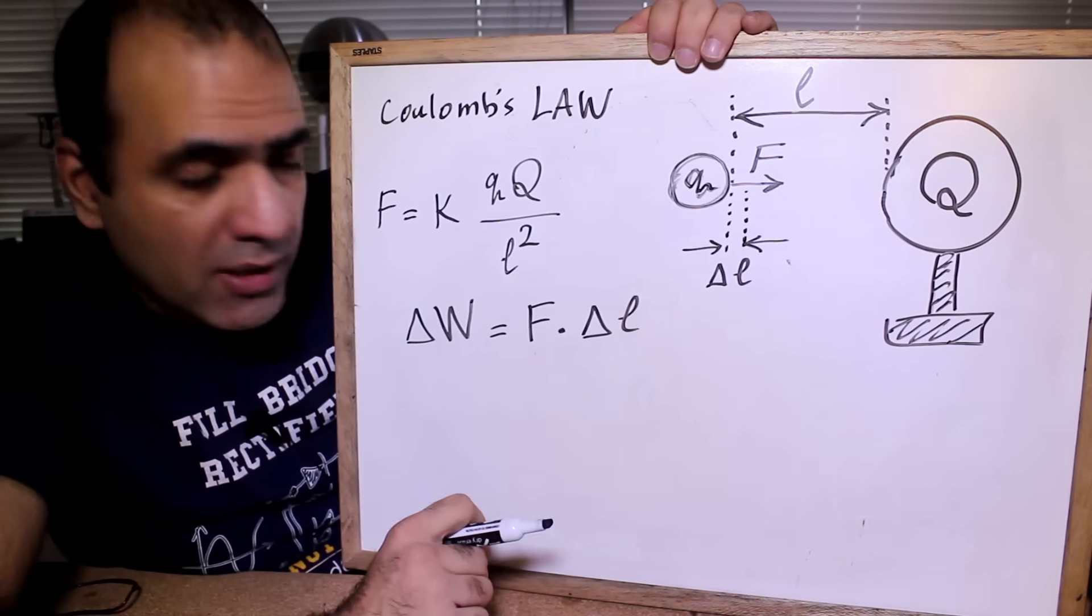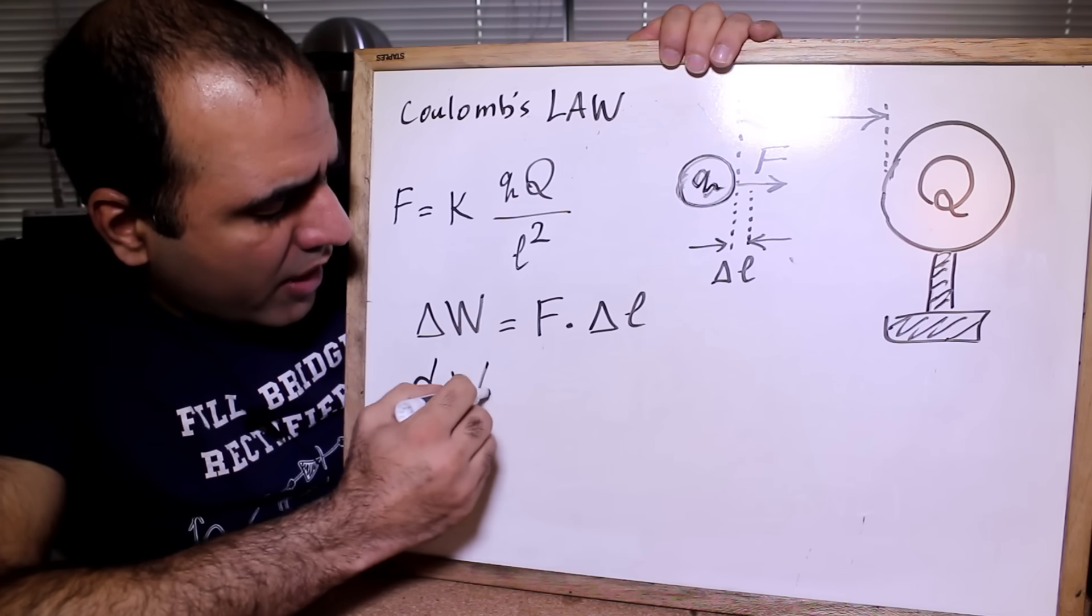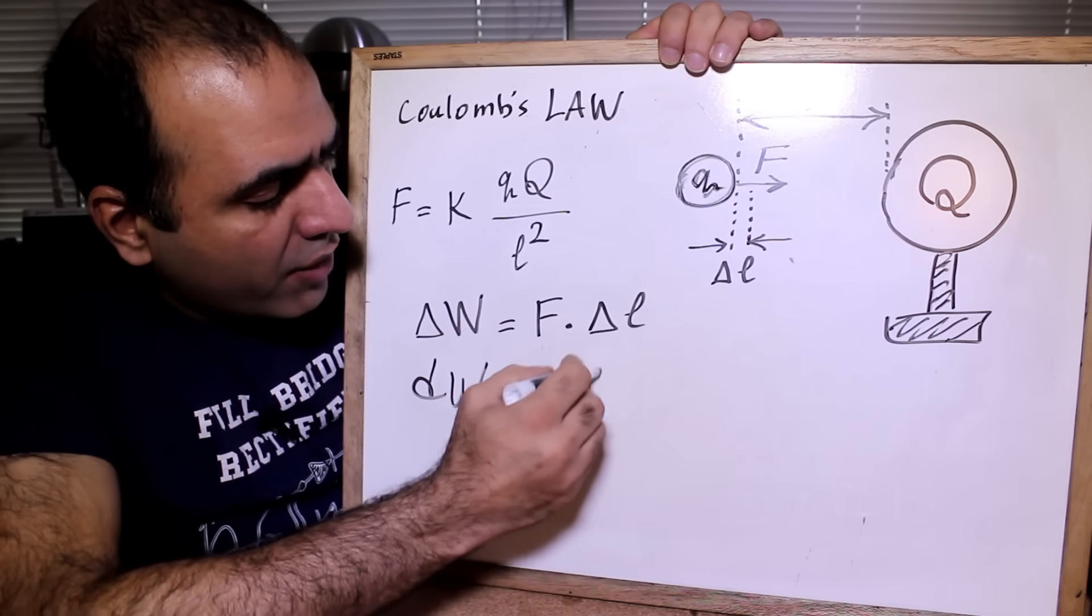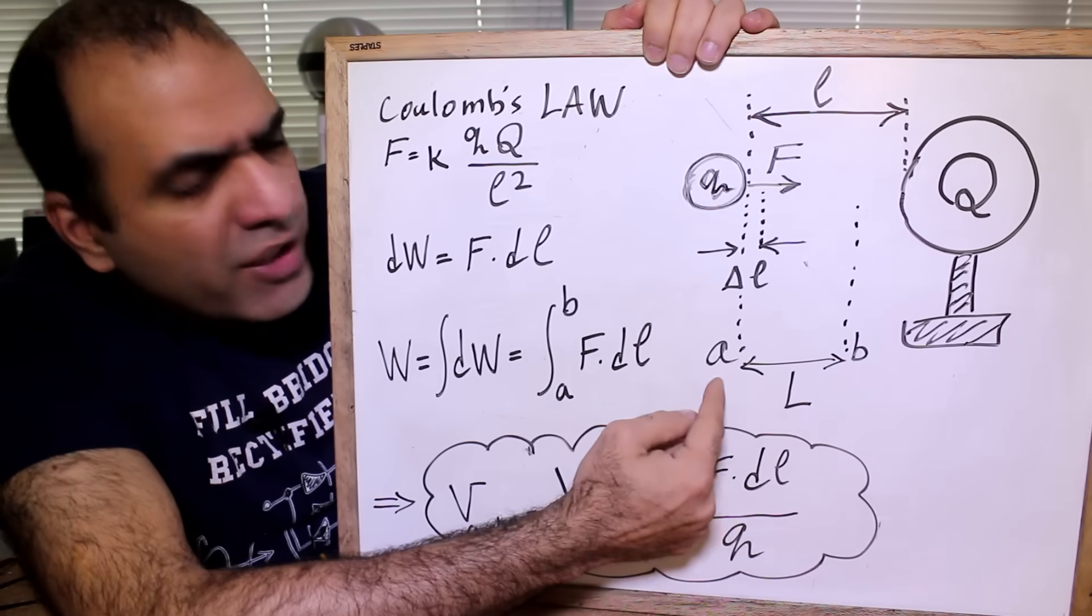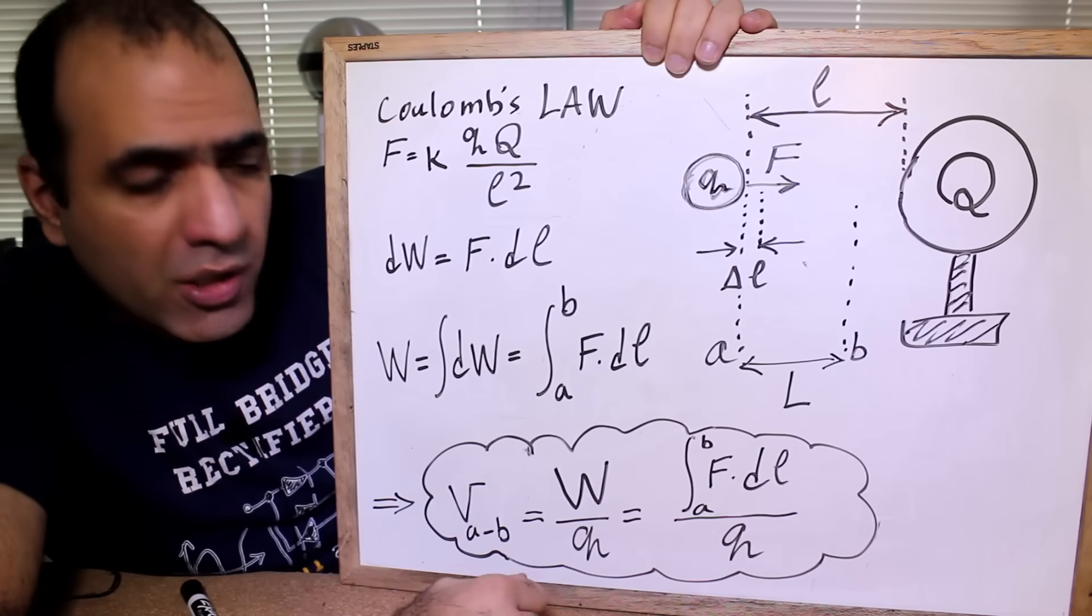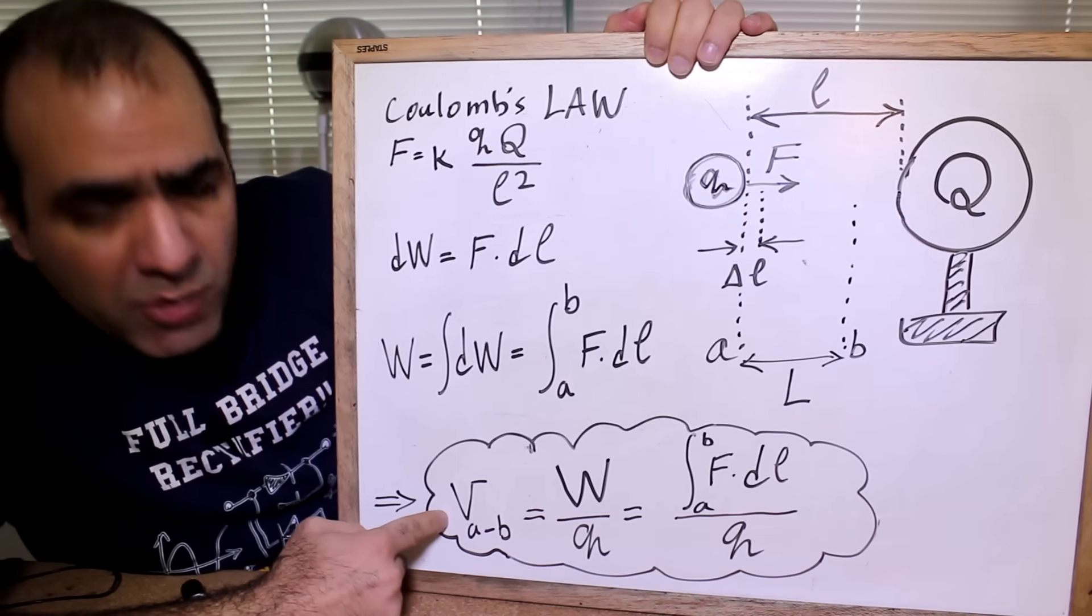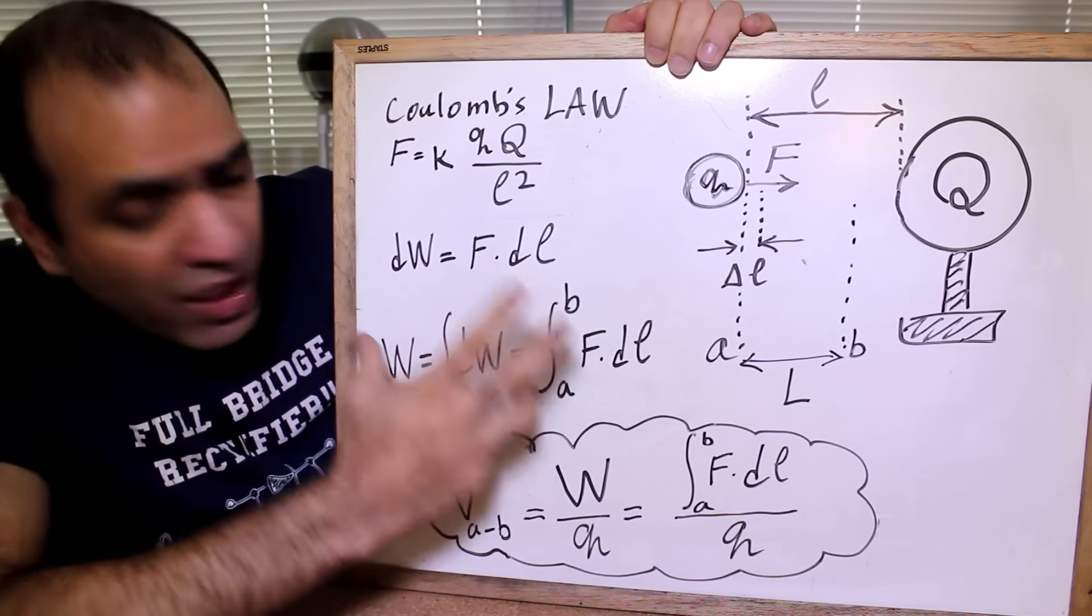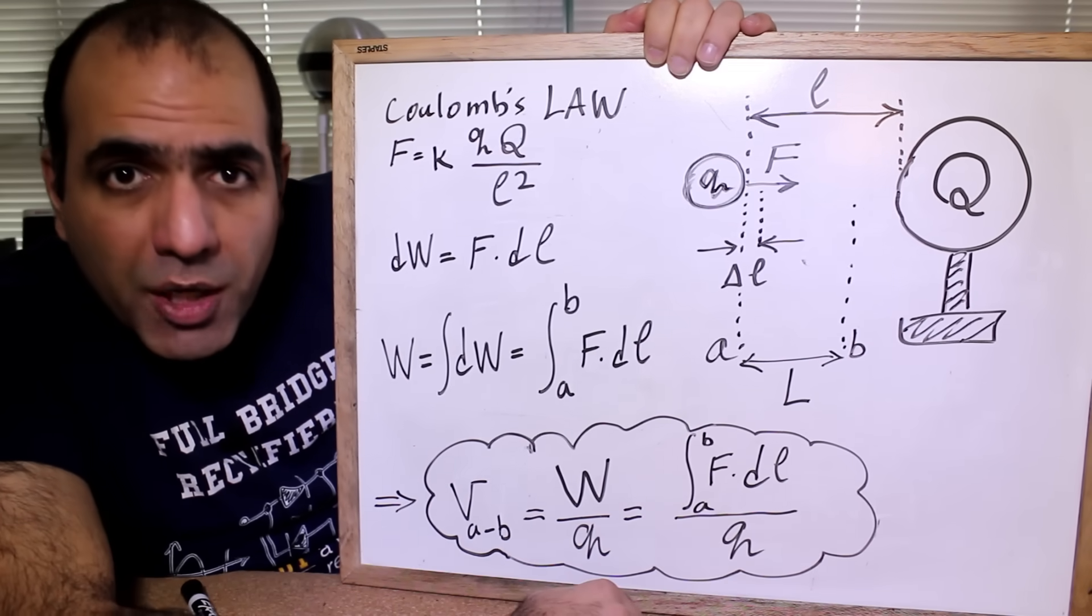So the work done with that force in that tiny distance or delta W is equal to the force in that spot times the distance. For extremely small distances, we can write this as dW equal to the F times dL. And if the charge moves the distance of L from point A to B, to get the total energy or work, we integrate the energy, which is integral of FdL from point A to B. So the voltage between points A and B would be that energy divided by q, or integral of FdL divided by q.